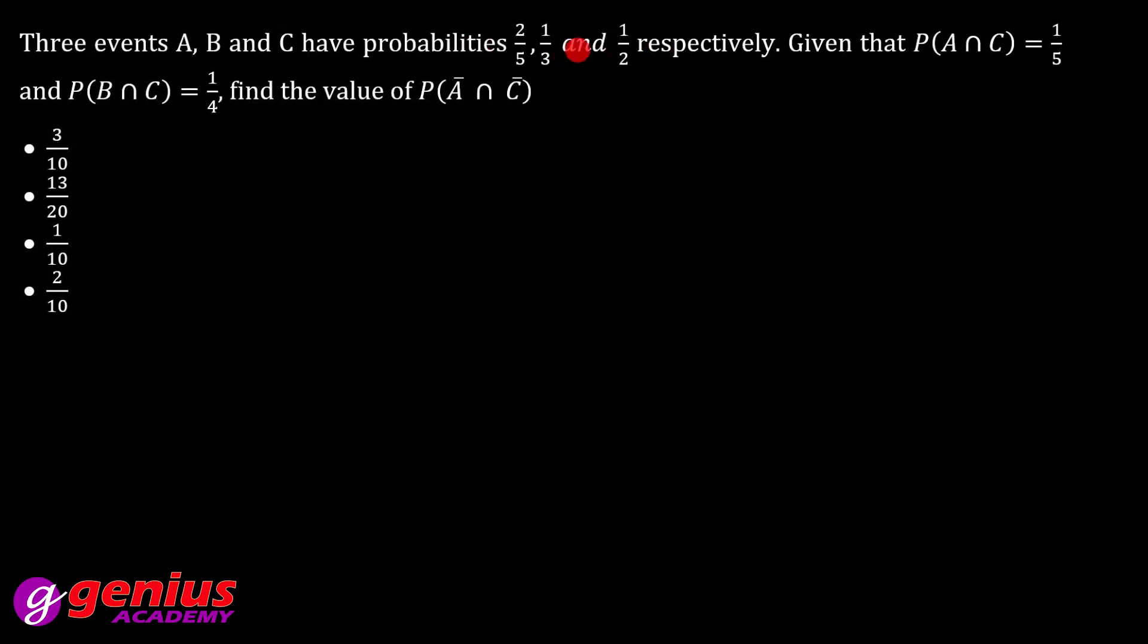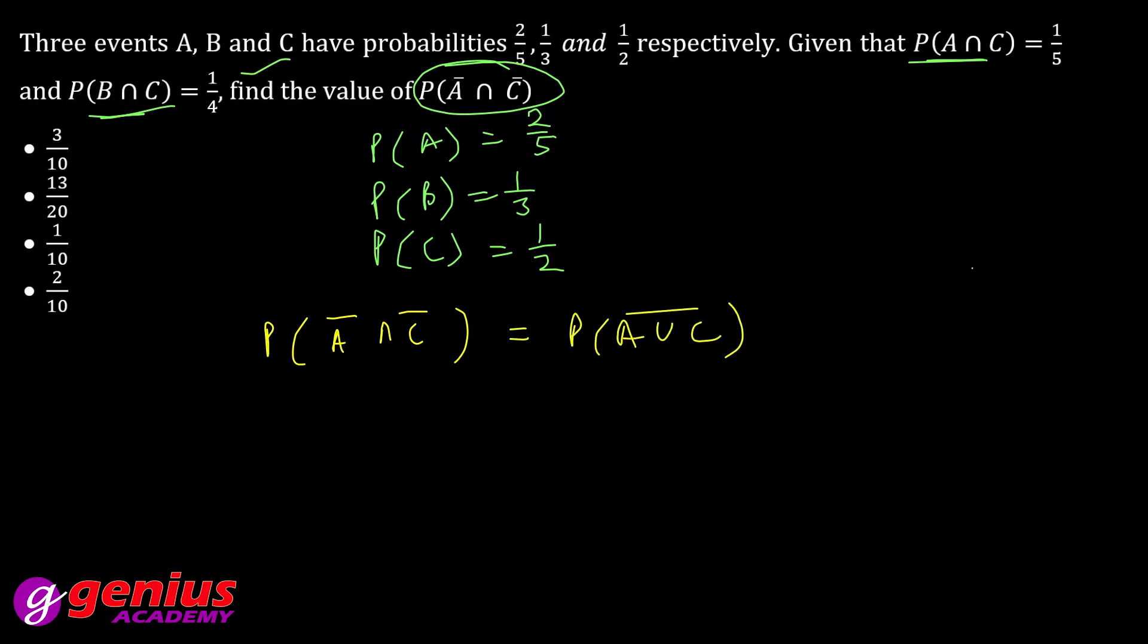Three events A, B, and C have probabilities P(A), P(B), and P(C) given respectively 2/5, 1/3, and 1/2. Given that P(A∩C) = 1/5, P(B∩C) = 1/4, find the value of P(A∩C). The formula: probability of A∩C is equal to P(A) + P(C) minus P(A∩C). Everything you have given values, put so what will happen?